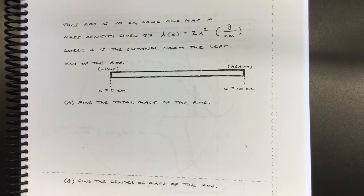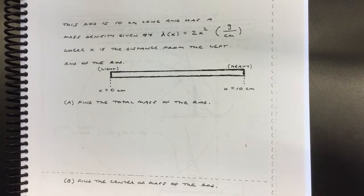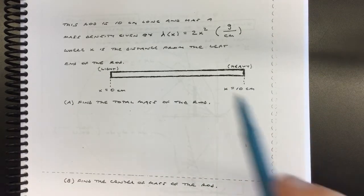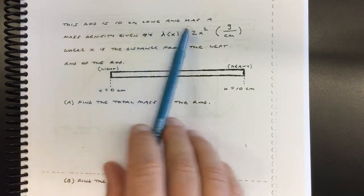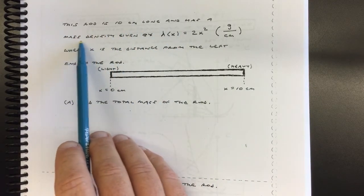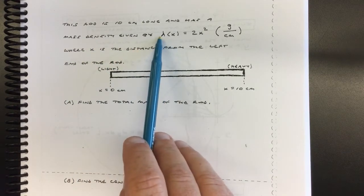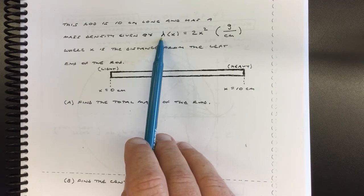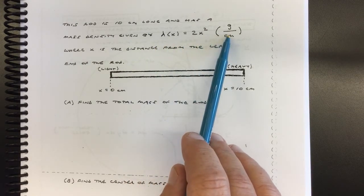So now we're going to look at a system where we actually have to use calculus to find the center of mass. This is on page 187. The prompt says this rod is 10 centimeters long, and it has a mass density given by lambda of x. That's going to be the character we're using for mass density here: lambda of x equals 2x squared grams per centimeter.